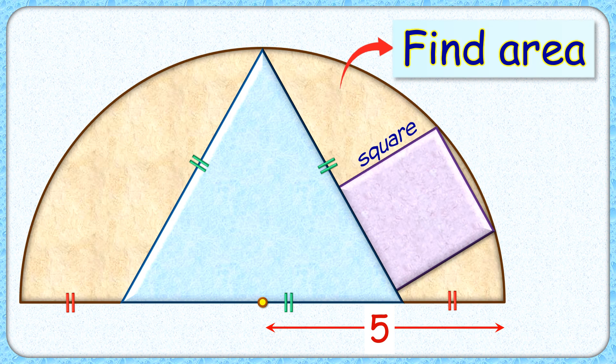Welcome everyone to this interesting question. We have a semicircle with radius 5 centimeters with an equilateral triangle and a square inside it. The equilateral triangle is at the center of this semicircle. The exciting part is, with this limited data, we have to find the area of the square.